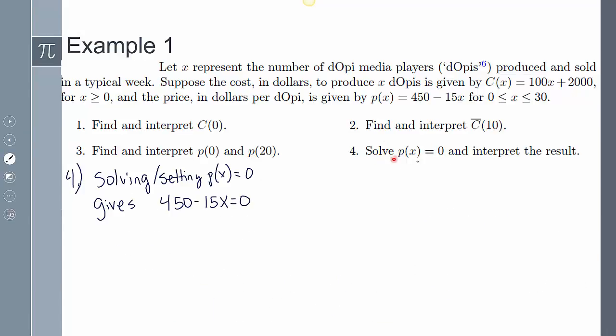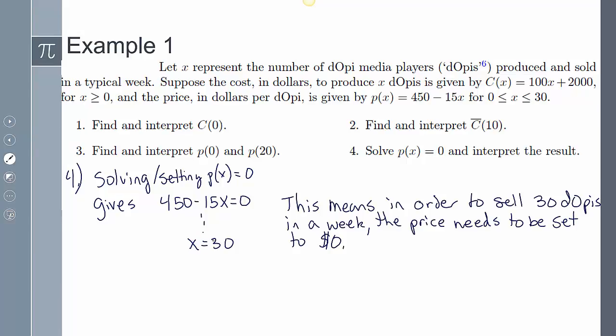And the last one, solve p(x) equals zero and interpret the result. So if I set p(x) equal to zero and solve for it, I'm going to get x equals 30. And now this means to sell 30 DOPs, the price needs to be zero. So to get 30 DOPs sold, it's going to have to be $0. Now that's the edge of my domain. So if I sold 31, this value is actually going to be negative, which means that I have to give money away to people just to be able to get rid of a DOP. And you can't sell a negative number of DOPs. So that's why we have this part of our domain here.